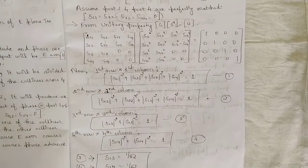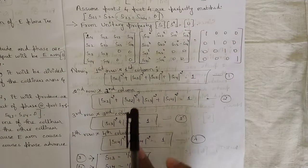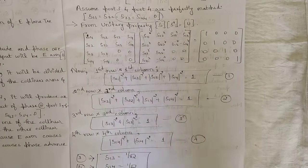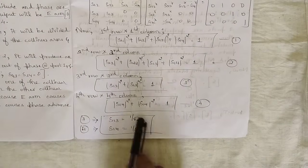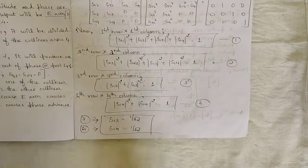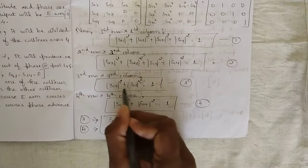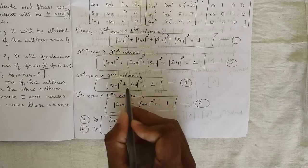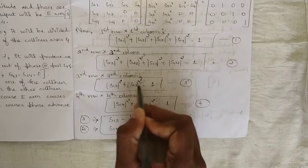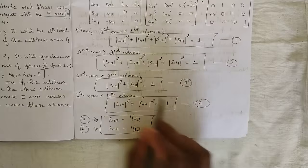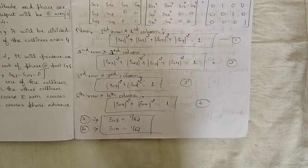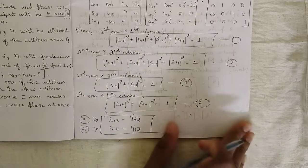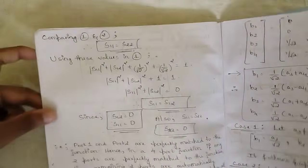From equations 3 and 4 we directly get s13 and s14 equal to 1/√2. Simplifying: 2·s13² = 1 gives s13² = 1/2, so s13 = 1/√2, and similarly s14 = 1/√2. Please note this down.